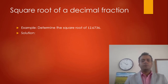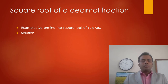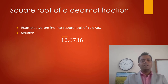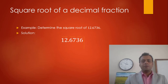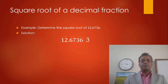For example, we are going to take the number 12.6736 and we have to determine the square root of this number. To solve this problem, we write down 12.6736 and put a bar on the left side of the decimal point — a bar on 12, then on 67, and then on 36. We know that 3 × 3 = 9 and 4 × 4 = 16, so we take 3, giving us 3 × 3 = 9, and put this 9 here.